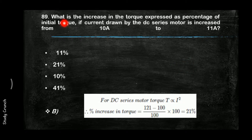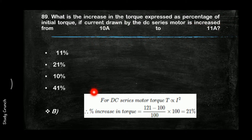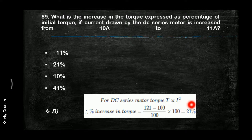What is the increase in torque expressed as a percentage of initial torque if the current drawn by a DC series motor increases from 10 A to 11 A? Since torque ∝ I², percentage increase = (121 − 100) / 100 × 100% = 21%, so the answer is B.